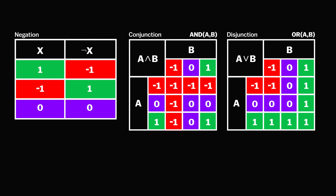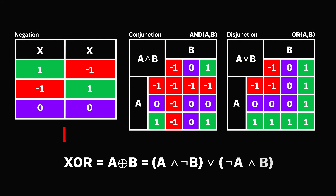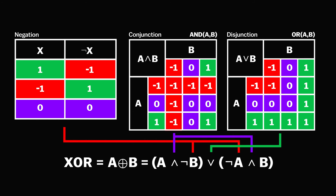Using just these three operators, we can define much more complex functions like XOR, which can be realized with two negations, two conjunctions, and a disjunction.